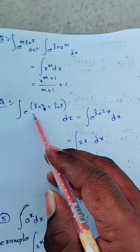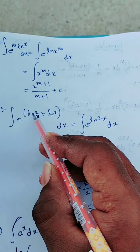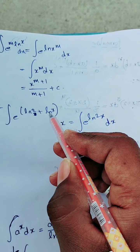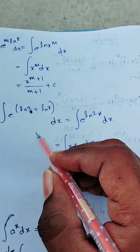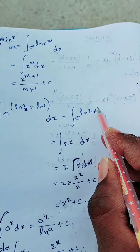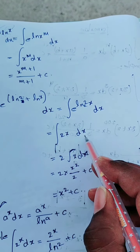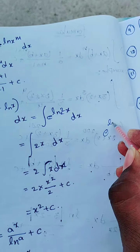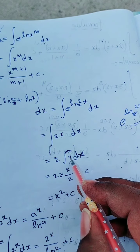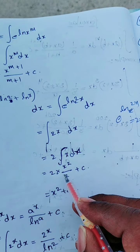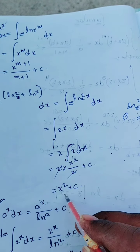Now let us go for another question. Integration of e power ln 2 plus ln x dx. Using log a plus log b equals log ab, this becomes e power ln 2x, which equals 2x. So integration of 2x dx is 2 times integration of x dx, giving 2 into x square by 2 plus c. The 2 cancels, so the answer is x square plus c.